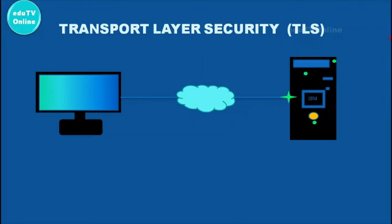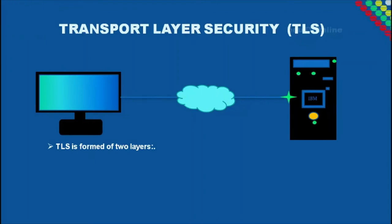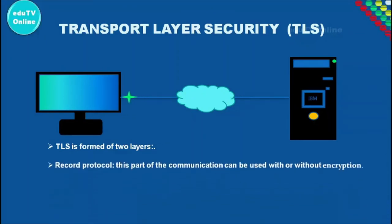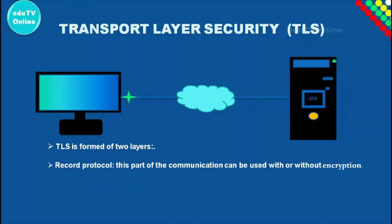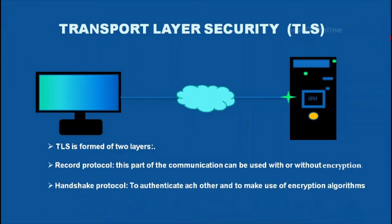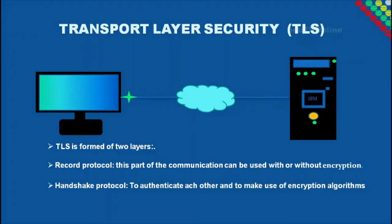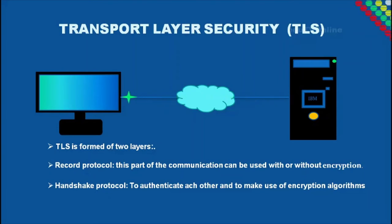TLS is formed of two layers. Record Protocol: this part of the communication can be used with or without encryption, and it contains the data being transferred over the internet. Handshake Protocol: this permits the website and the client, or user, to authenticate each other and to make use of encryption algorithms, so a secure session between client and website is established.